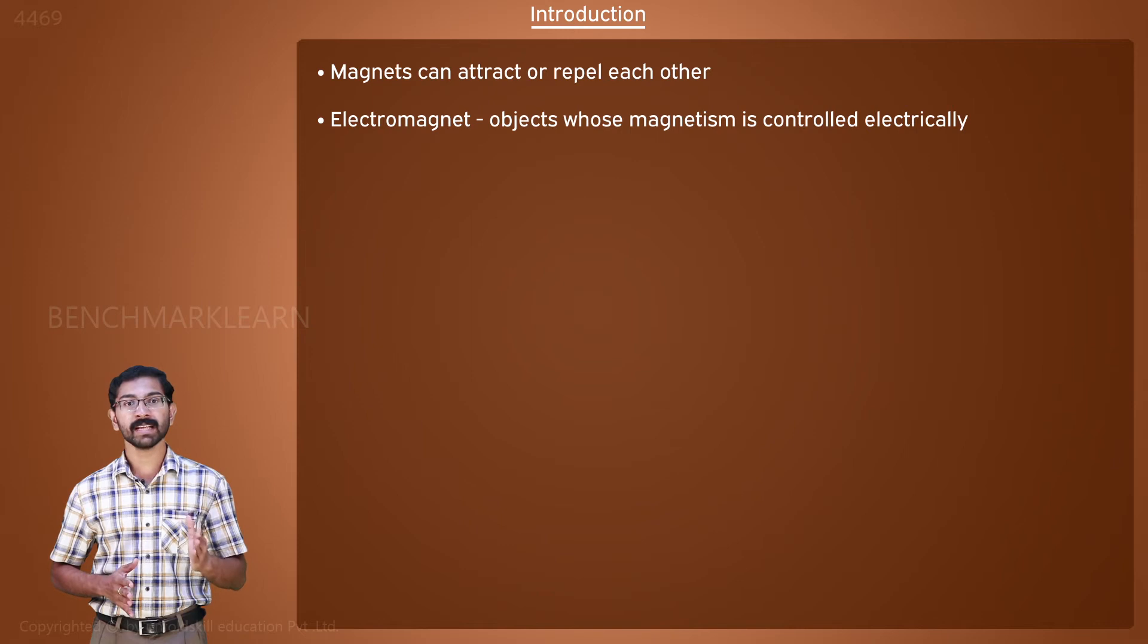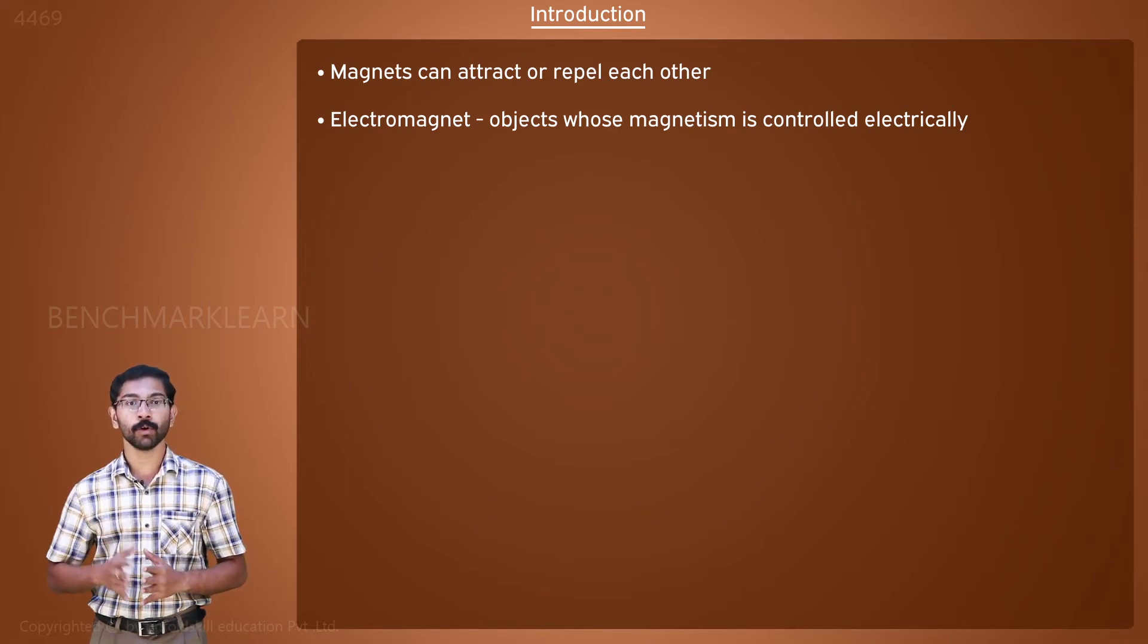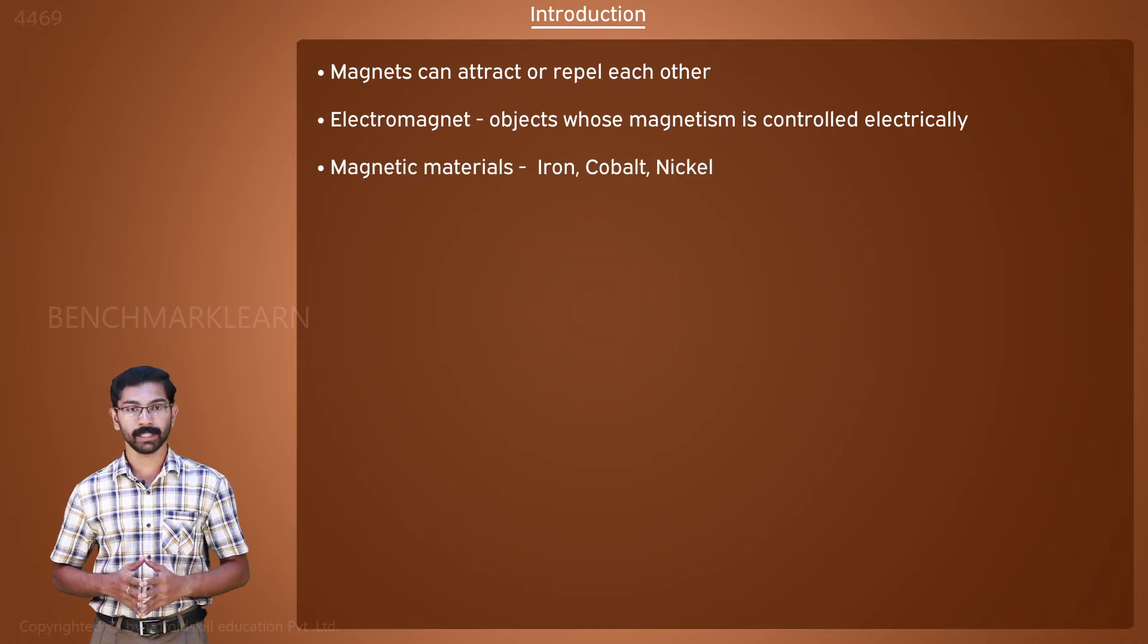Physicists analyzed and measured the effect a magnet has on its nearby objects. They found some materials that are attracted to a magnet and called them magnetic materials.